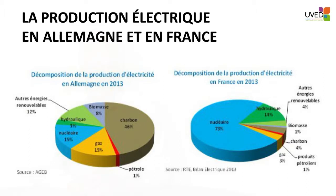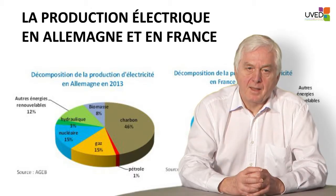In France, power plants producing electricity show that France and Germany have the same share of renewable energies. The difference is that in France, renewable energies are mainly represented by hydropower, whereas in Germany they prefer biomass, hydraulic, and wind to a certain extent. It doesn't show on the pie chart, but in France we have 75% nuclear power plants, whereas in Germany it's about 75% coal, gas, and some oil.